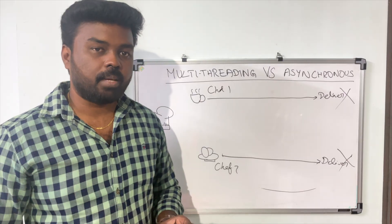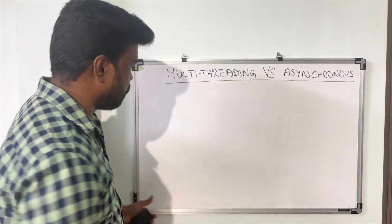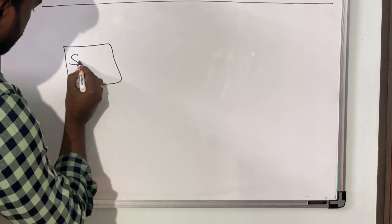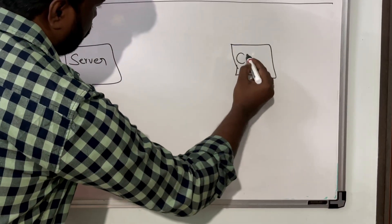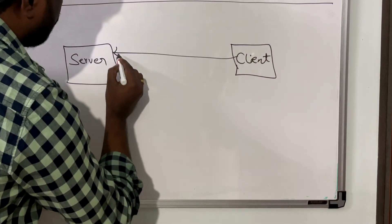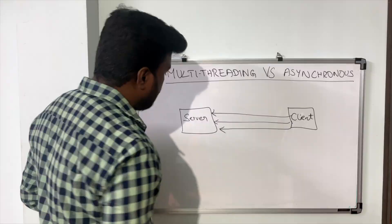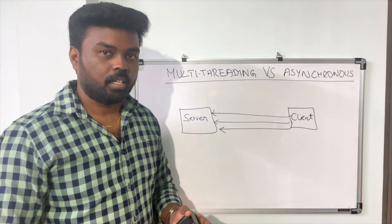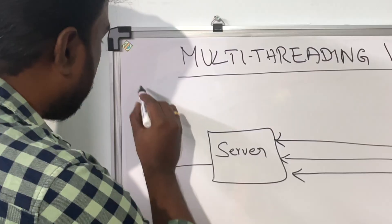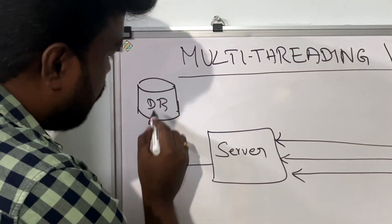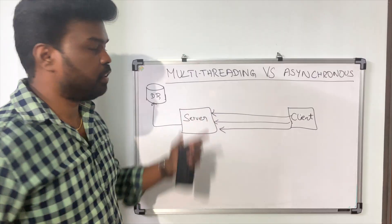Now let's understand the same concepts using actual programming examples. Consider an application server that has to handle requests from the client. The server has to handle multiple requests from the client at the same point of time. The server could be a simple web API that receives a request, processes it, talks to a database to fetch some results, and then gives the results back to the client.